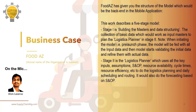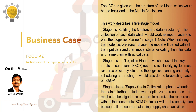Stage two is the logistics planner, which uses key inputs such as assumptions, sales and operations plan, resource availability, cycle times, and resource efficiency to perform logistics planning, daily scheduling, and routing. It also does forecasting based on the S&OP. The supply chain optimizer in stage three resides within the logistics planner — it takes all inputs from the masters and data structure in stage one and produces outputs.